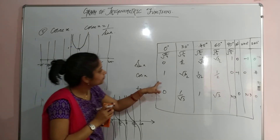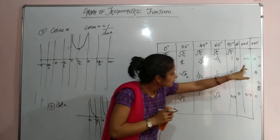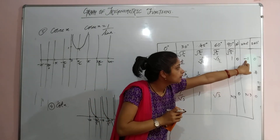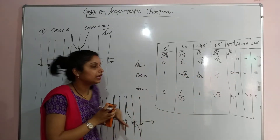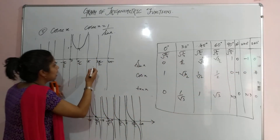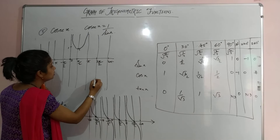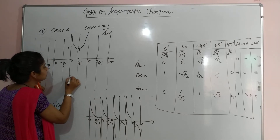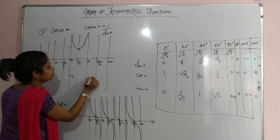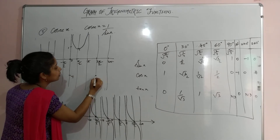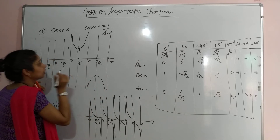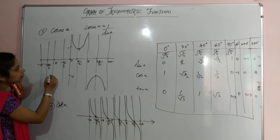At 270° (3π/2), sin is −1, so cosec is −1 as well. The graph dips to −1 at that point. This gives the lower branch of the cosec curve.